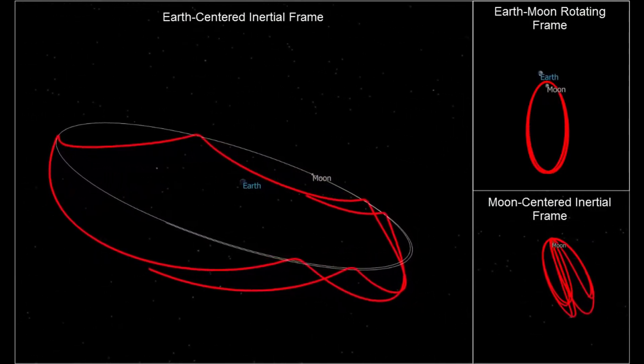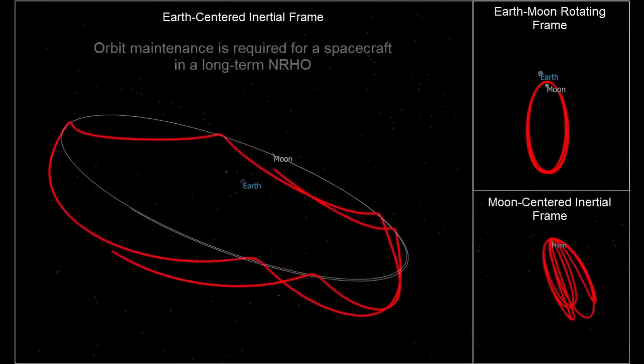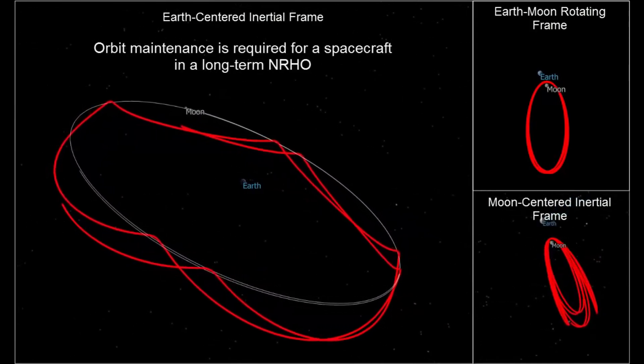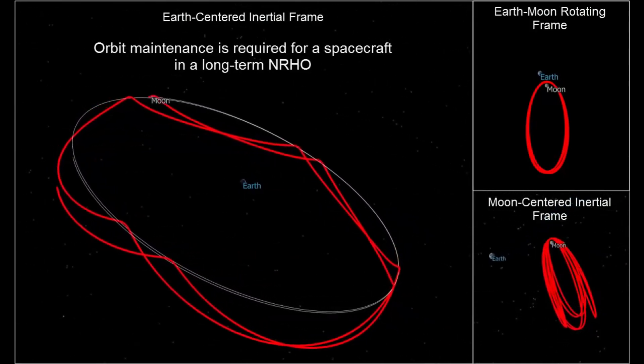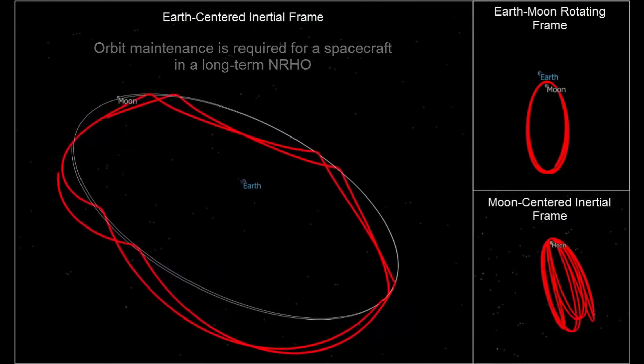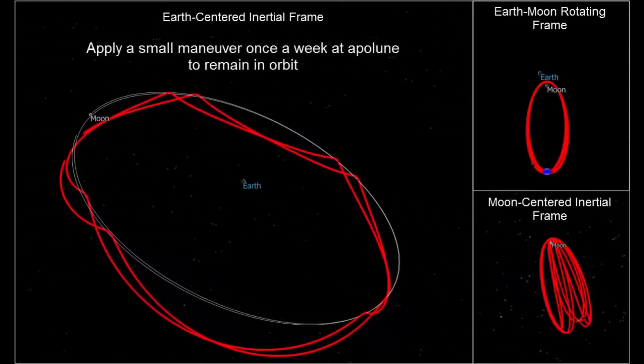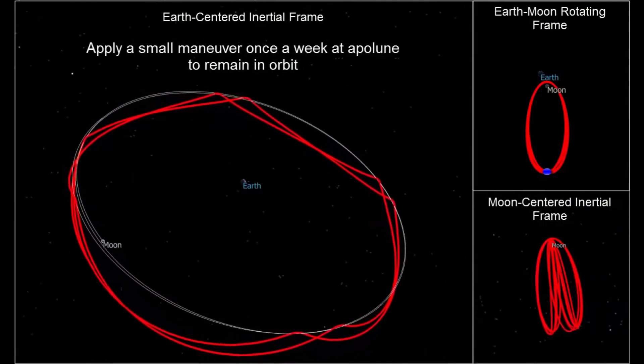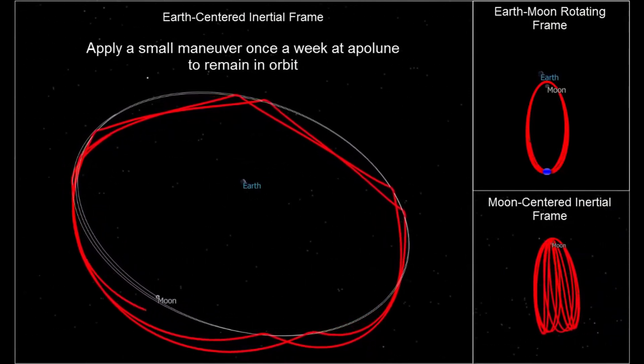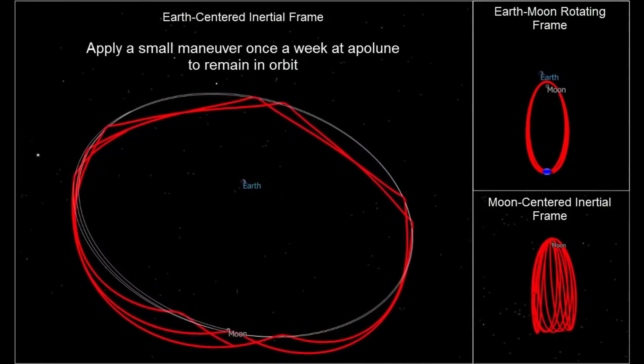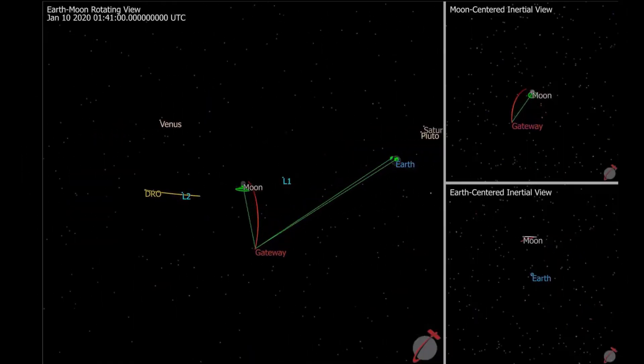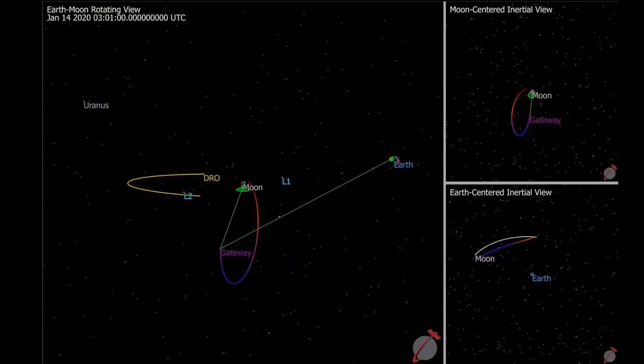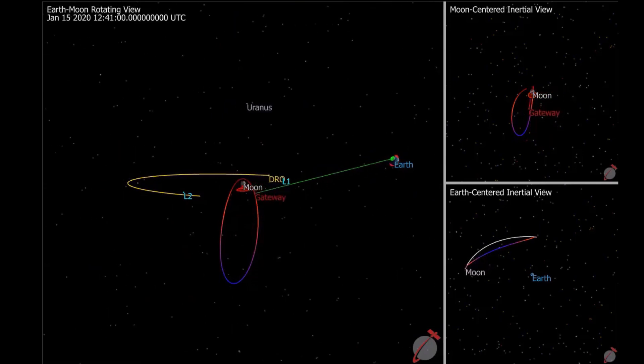The period they chose is specifically a 9 to 2 resonance with the period of the Moon. So that means for every two times the Moon goes around the Earth, the halo orbit is going to be completed nine times. The reason this was chosen was that they tried various other solutions and this just happened to be the one that gave them the best options in terms of avoiding eclipses by the Earth or the Moon. The reason they placed the point of close approach over the North Pole is because they're more interested in looking at the South Pole of the Moon. That's where Shackleton Crater is.